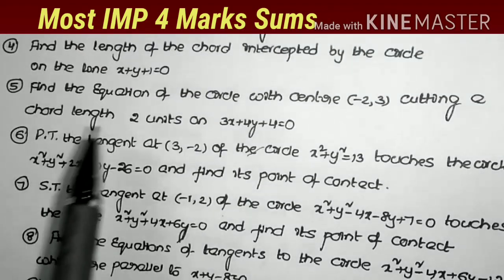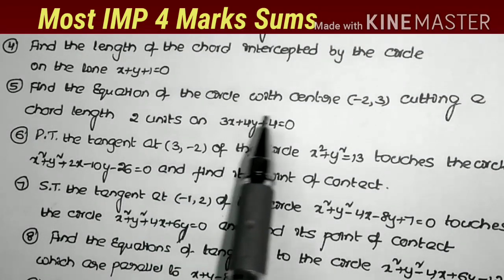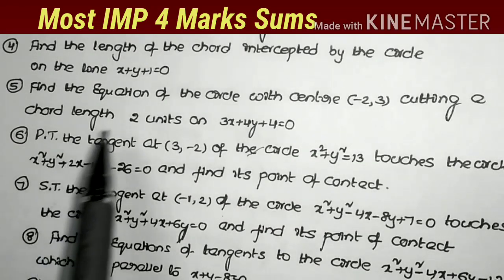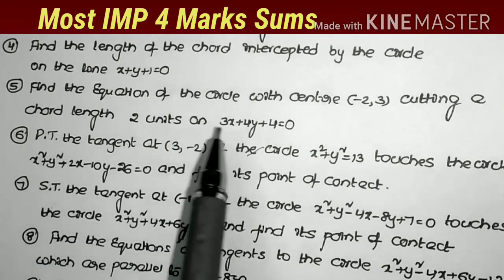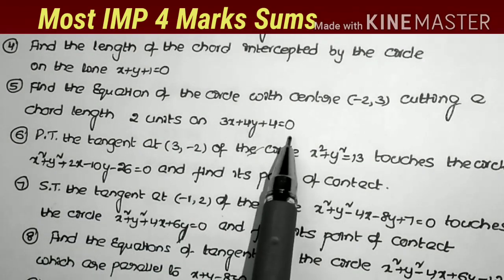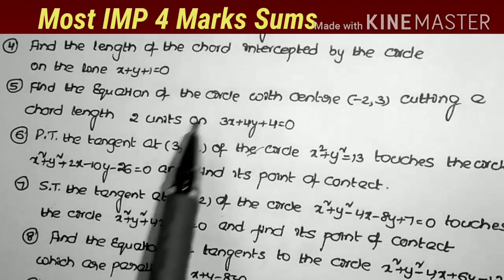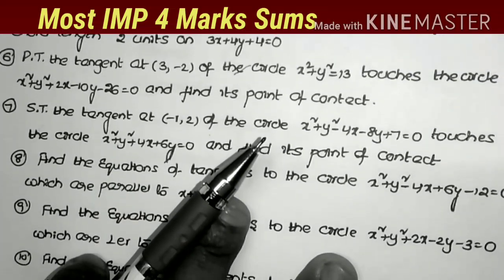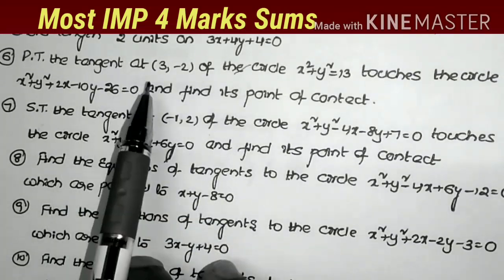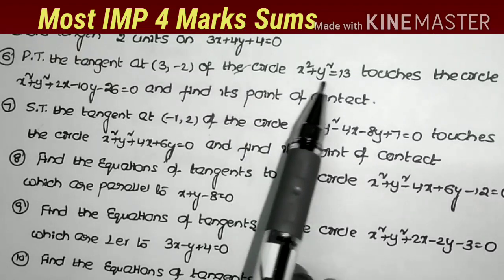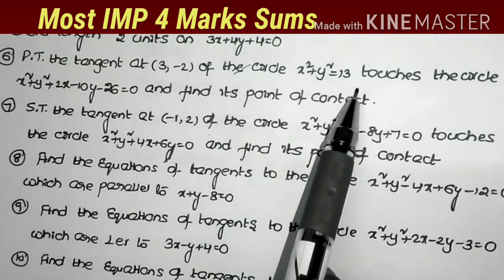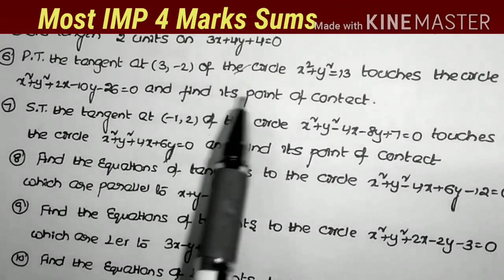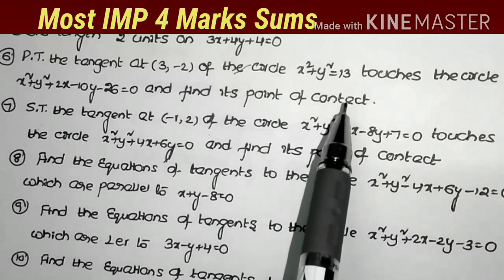Fifth problem: find the equation of the circle with center (-2, 3) cutting a chord of length 2 units on 3x + 4y + 4 = 0. Most important problem. Next: show that the tangent at (3, -2) of the circle x² + y² = 13 touches the circle and find its point of contact.